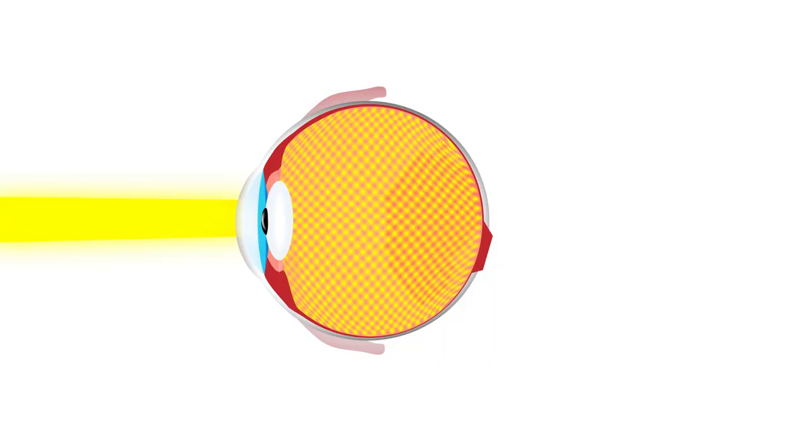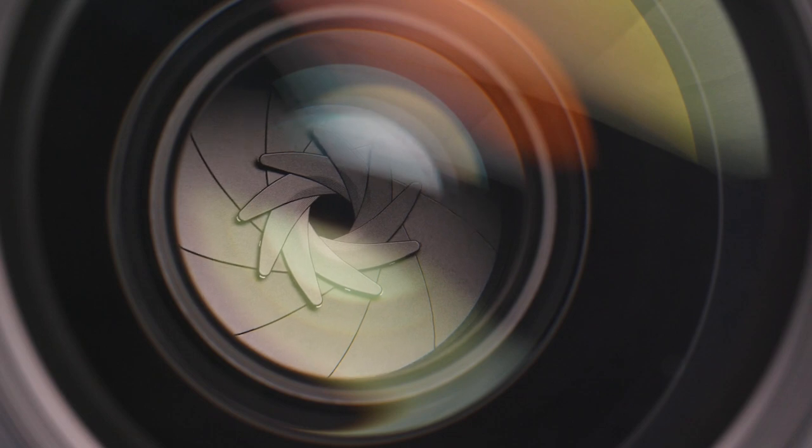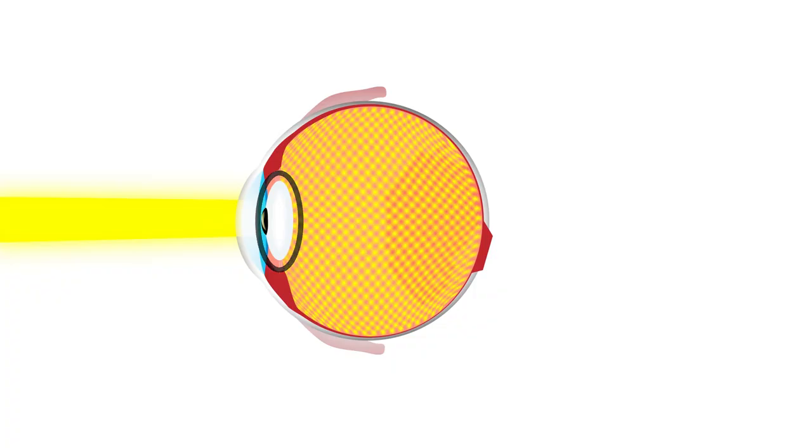Once the light passes through the pupil, it encounters the lens. Just like a camera lens, the lens in your eye focuses those rays of light. As the light is focused, it continues on its journey to the back of your eyeball.